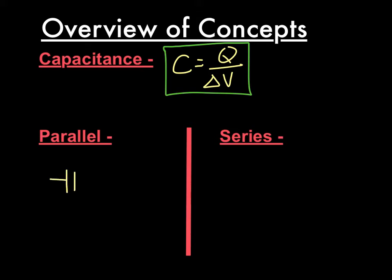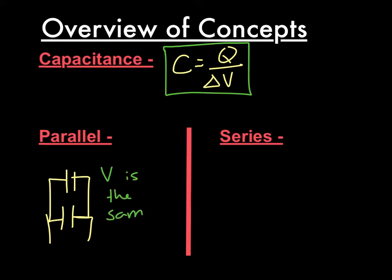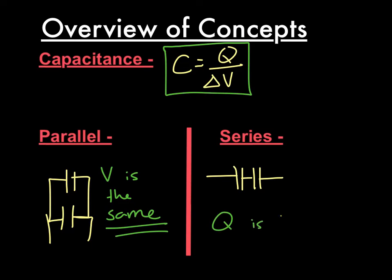Parallel circuits have two paths you can go through. Here's your battery — you can trace a path from the battery and go either this way or that way, so these are in parallel. The important thing about parallel circuits is that voltage is the same. In a series circuit there's only one path, and in a series circuit Q — the charge — is the same. You can think about this because if there's only one path, all the charge that goes into one capacitor has to come through.